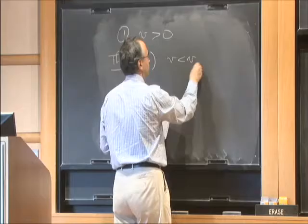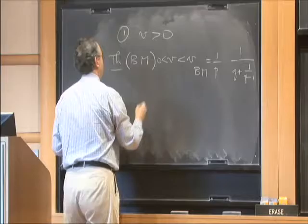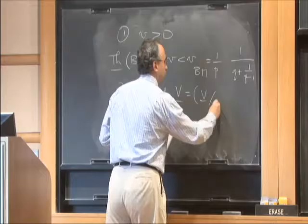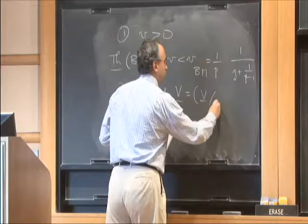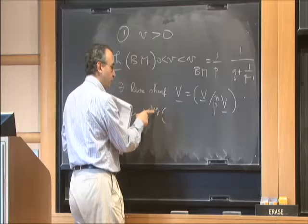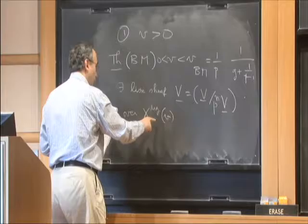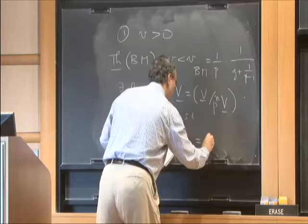Now we want to mimic all this, but with a positive v. We start with the theorem of Brinon-Mokran: there exists — if v < v_{BM} (which is 1/p·(1/g + 1/(p-1)), not optimal but it works) — a lisse sheaf, meaning a projective system of étale sheaves. It is important to work over the rigid space, not the formal scheme; you need to invert p for the sheaves to be étale.